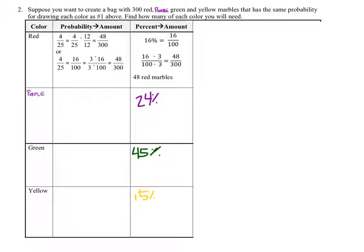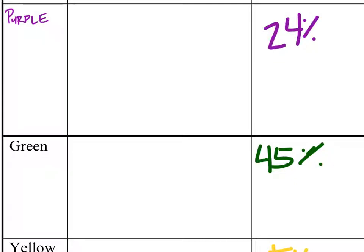Since we want 300 marbles in the bag, for purples, we've got 24% out of 100. We're going to make this a ratio that is equivalent to another ratio. When we have equivalent ratios, we call them proportions. Out of these, instead of 100 marbles, we want 300 marbles. You could just take 100 times it by 3 to get 300. You'd need to take the 24 times it by 3, which would be 72. 72 purple marbles.